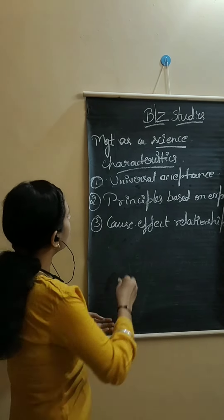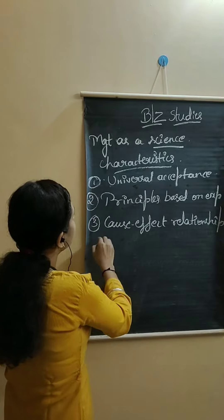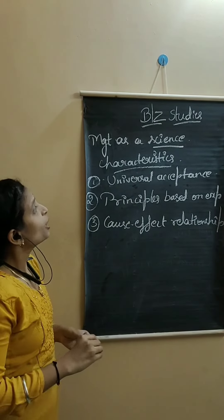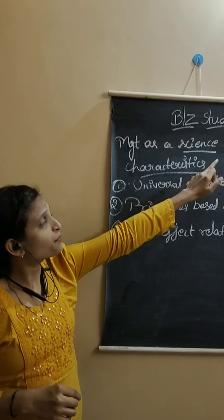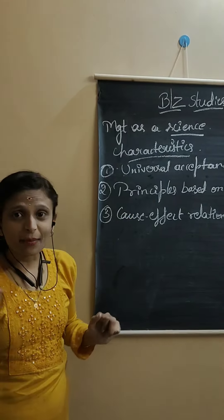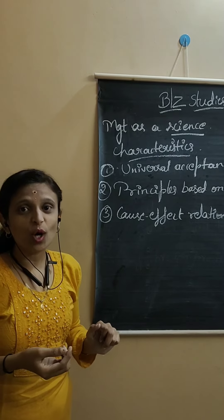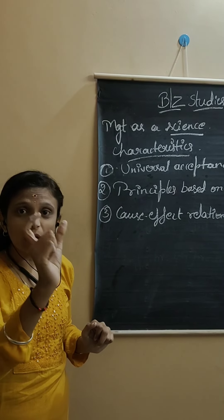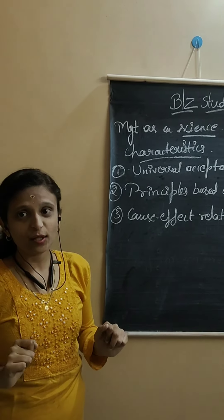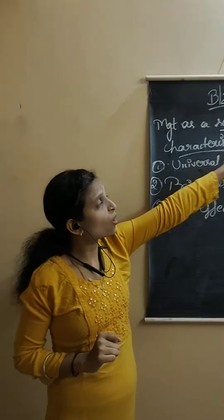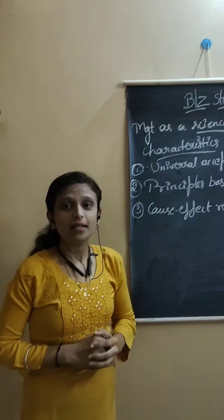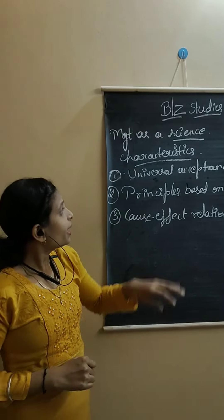So, these are the three points that state the characteristics of management as science: a systemized body of knowledge relating to a particular field of study that develops a cause and effect relationship.